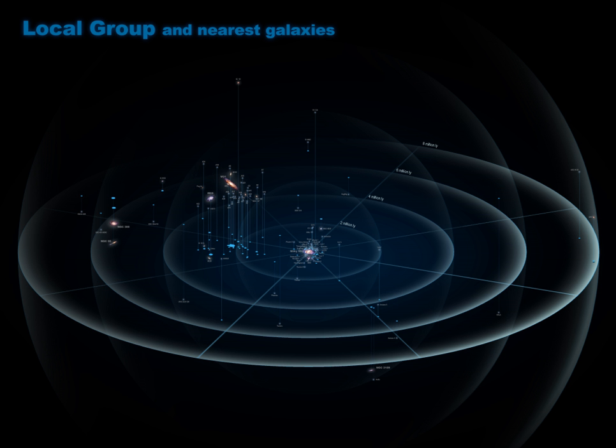This is because of their interactions with the dense hot gas halo of the Milky Way, which strips cold gas from the satellites. Satellites beyond that region still retain copious quantities of gas.